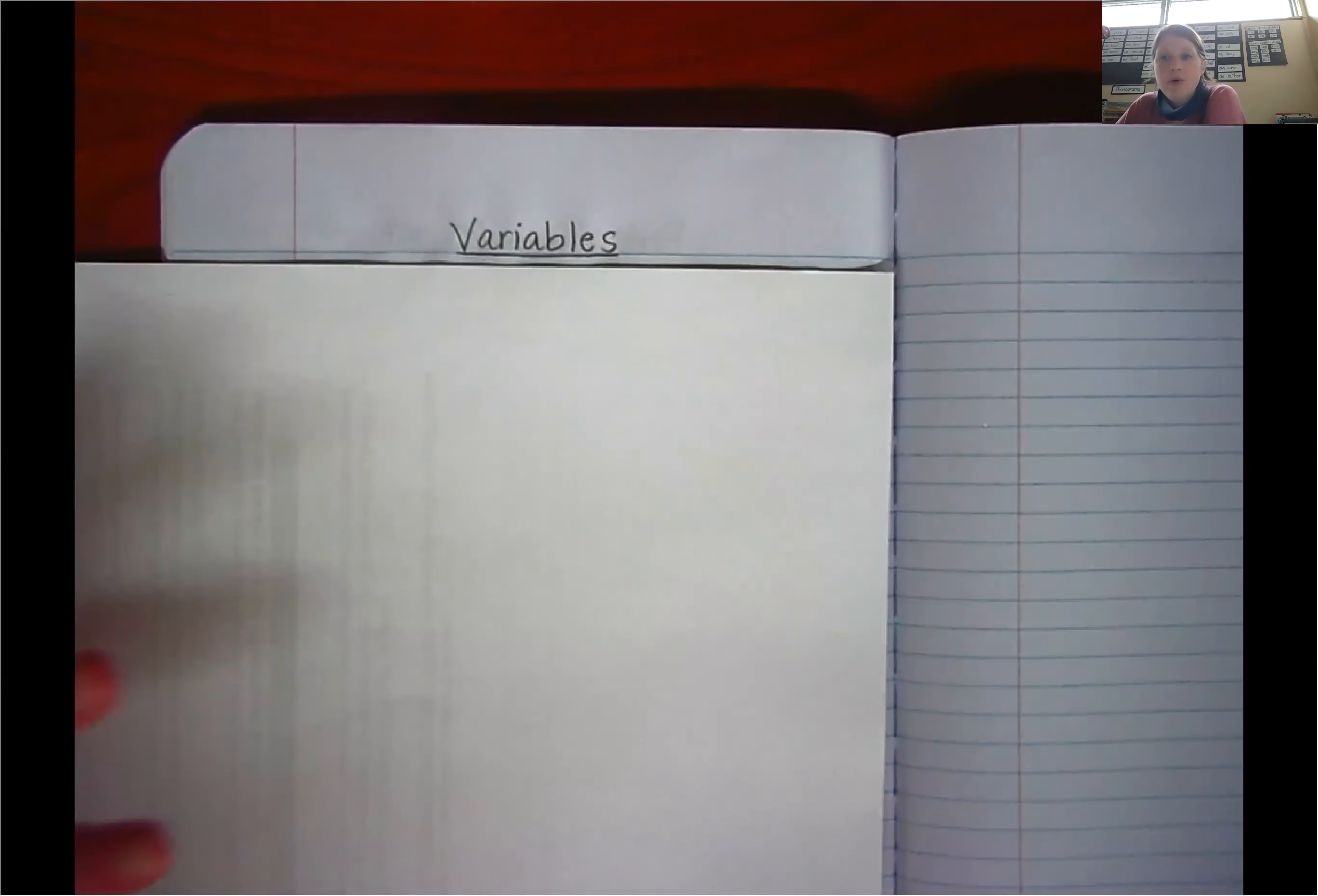It's actually really important in order to complete the scientific method that you understand variables. Otherwise, it can be really tricky to design data tables and graphs according to your variables or make conclusions or proper hypotheses using the correct form. So let's make sure we understand this.